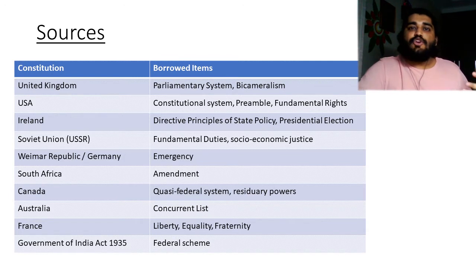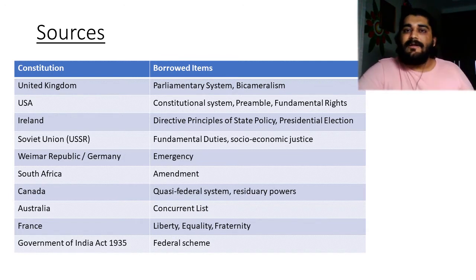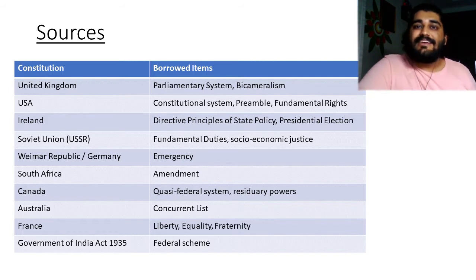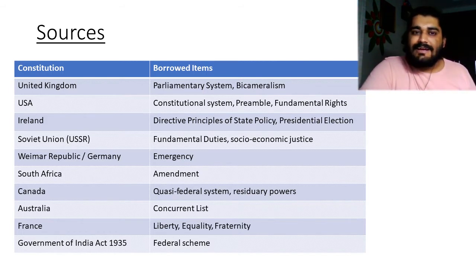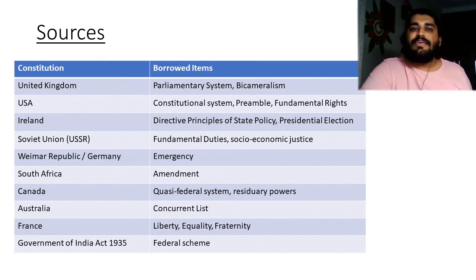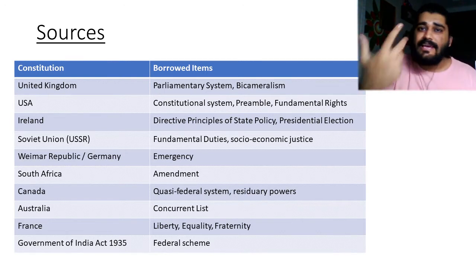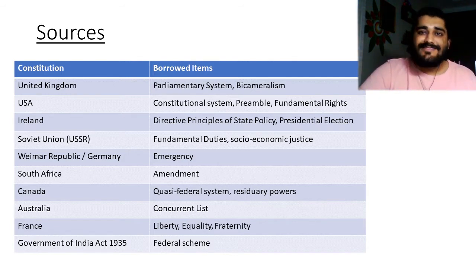However, the idea of there being a constitutional democracy is something that we took from the USA. The United Kingdom does not really have a constitutional democracy — they have a constitutional monarchy. The Queen is the supreme authority in that country and all powers flow from her as the leader of the land. In the US, they had a republican democratic system governed by a constitution. So this entire idea of there being a constitutional democracy is something we took from the US.